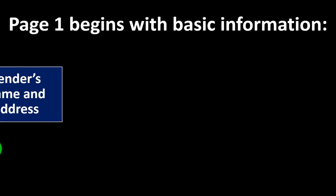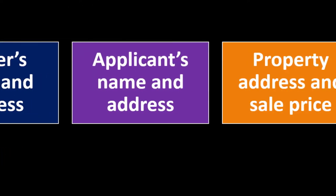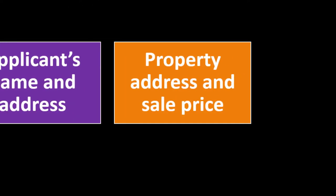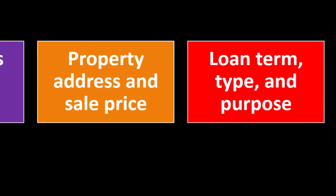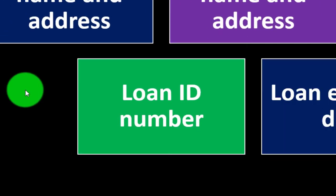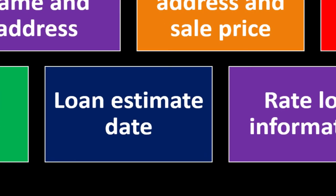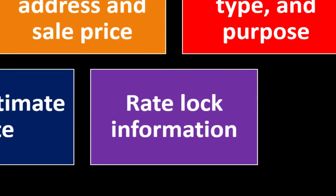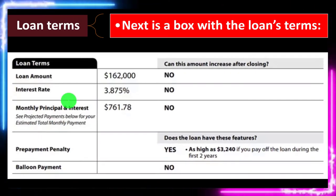Page one begins with basic information: the lender's name and address, the applicant's name and address, property address and sale price, loan term, loan purpose, loan ID number, loan estimate date, and rate lock information. These items establish the foundational details of the mortgage you've applied for.